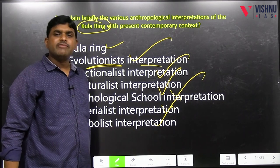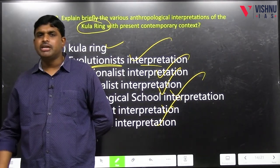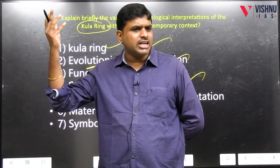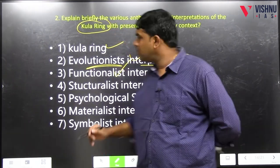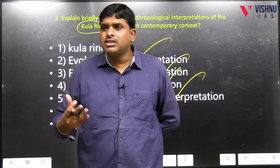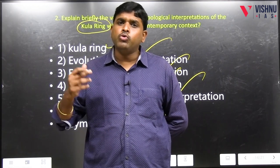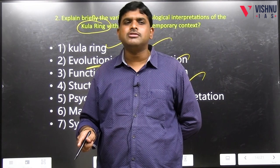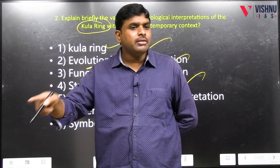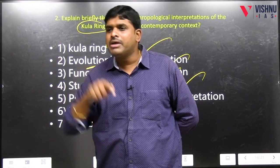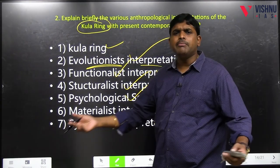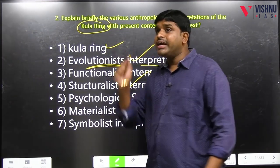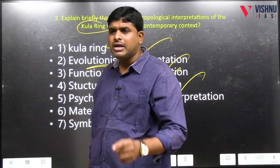Evolutionist interpretation: Kula Ring is a cultural survival — today in the 21st century there is no benefit of Kula Ring, but still the Trobriand Islands and Mailu Island people are participating. Without any net benefit, if it is present, it is called culture survival. Functionalist: it unifies nearly 800 people across 16 islands and 16 tribal communities. Structuralist: in order to protect cultures and relations, they are ready to go for voyages in spite of the death threat from the ocean. Psychological school: they want to continue the culture because status quo is very important in tribal society, and Kula Ring is part of their folklore and myths. Materialist: they get material benefits like soulava and mwali. Symbolic: it is a symbol of togetherness, social cohesion, and status quo.